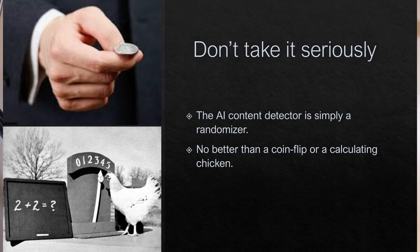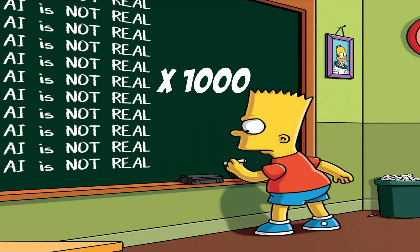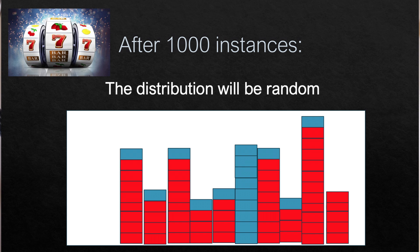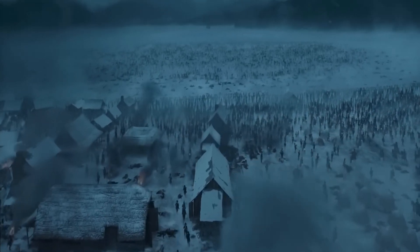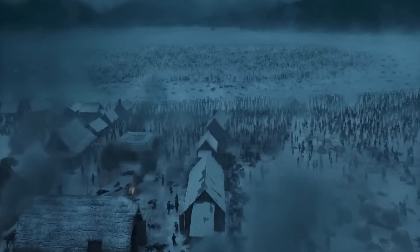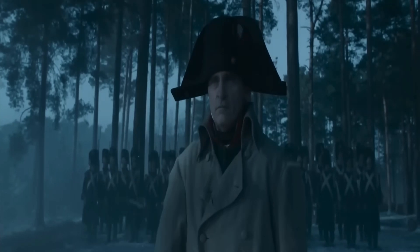If the teacher is still hesitant to take your side, then challenge them to upload the paper 1000 times and tally all the times it randomized in your favor. After charting the results, they will find the probability distribution to be random — no better than a coin flip. After numerous complaints, enough teachers and faculty are going to pass the burden of proof onto the school district and stop using the AI detectors altogether.